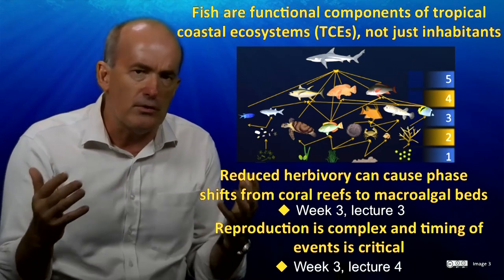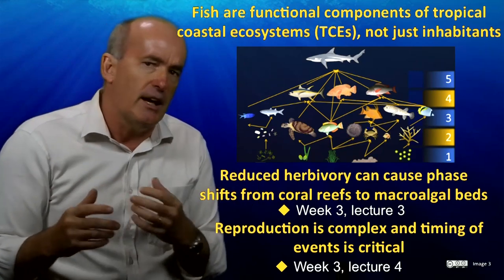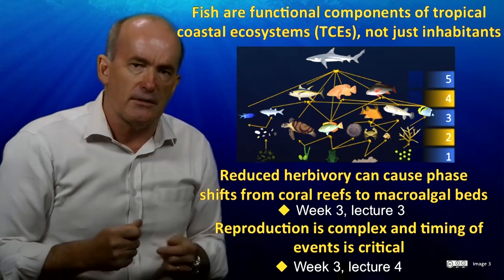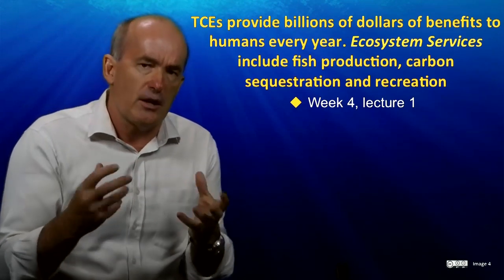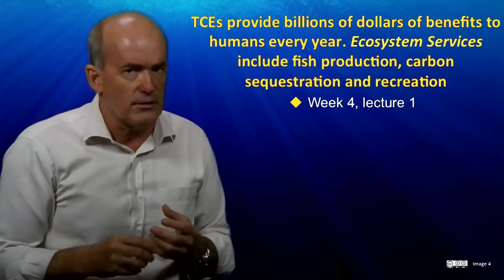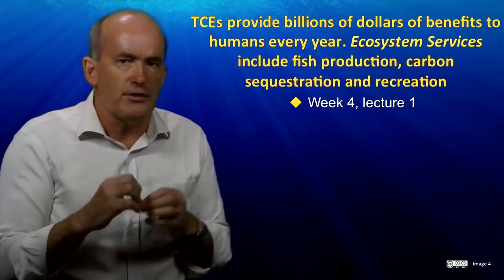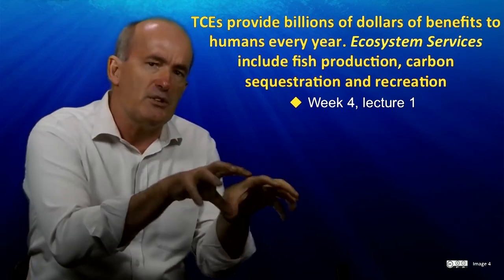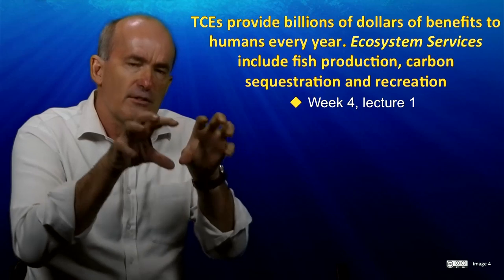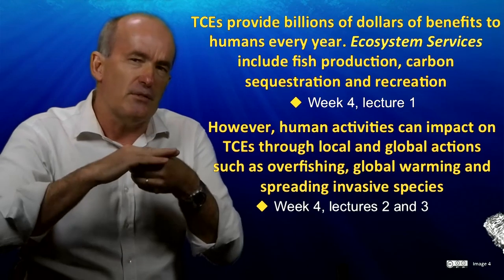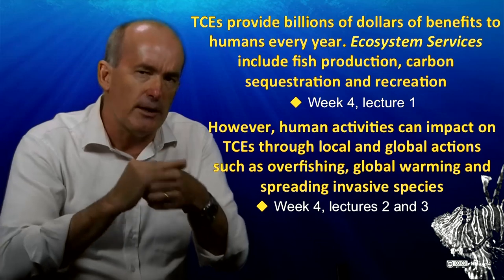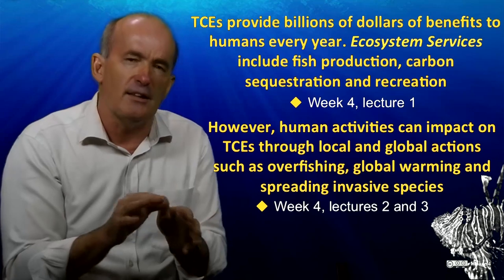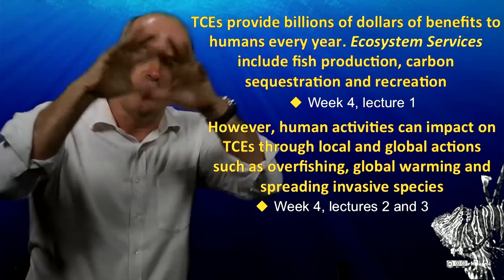We explored many modes of reproduction of marine organisms and how the crucial timing of these events is important for maintaining populations. We then stepped up a level and looked at human interactions with tropical coastal ecosystems. First, we considered the benefits that these ecosystems provide for the millions of people, and then we looked at how ecosystem services could be valued, and how these valuable ecosystems can be affected adversely by human activities at both local and global levels.